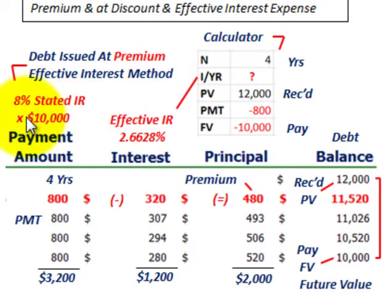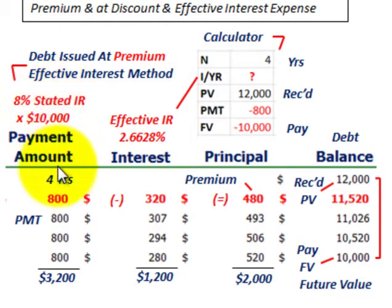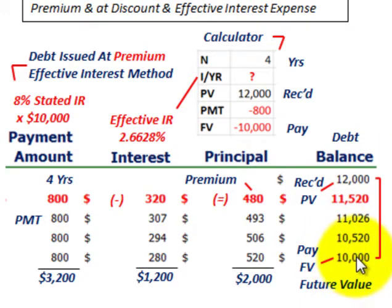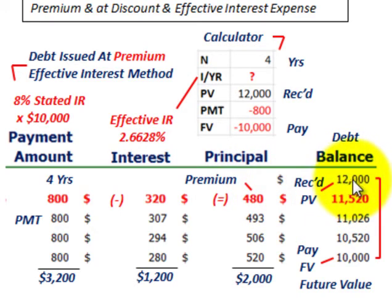So what do we mean by a premium? In this case, we're going to have a $10,000 loan for four years, with interest payments of 8% per year. What we mean by a premium is that we're going to receive $12,000 on this loan up front, and we're only going to have to pay back $10,000 at the end of the fourth year. So there's a difference of $2,000, and that is what we call the premium — we've received more than we have to pay back by $2,000, and that is what we have to amortize down.